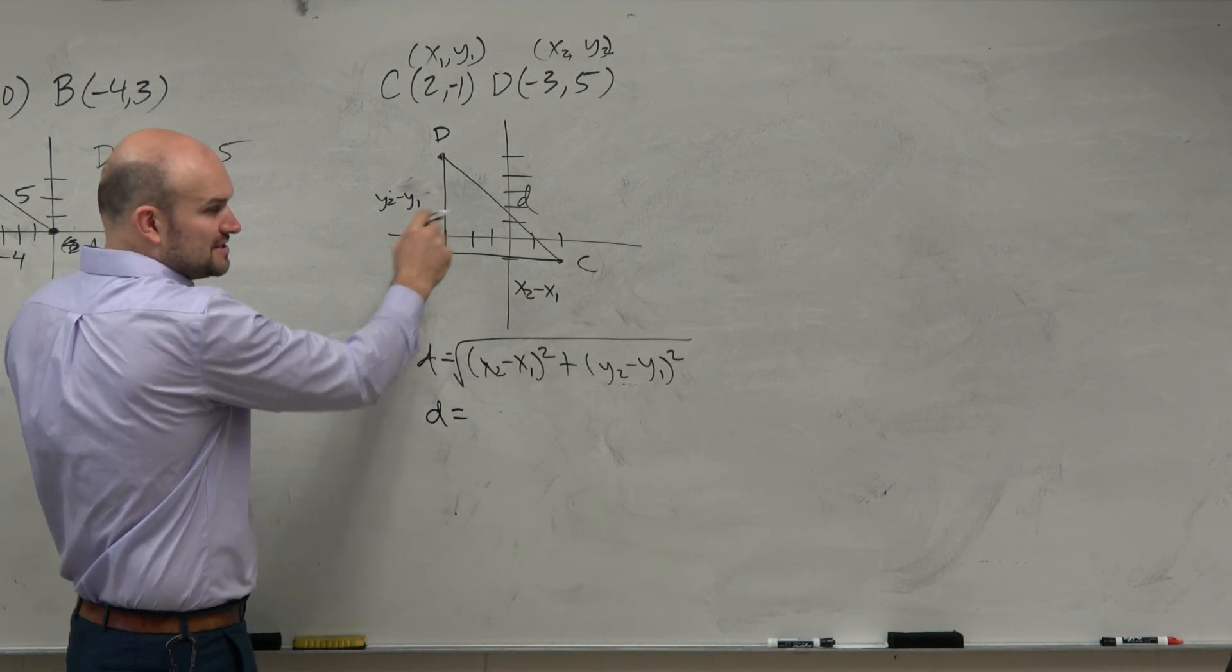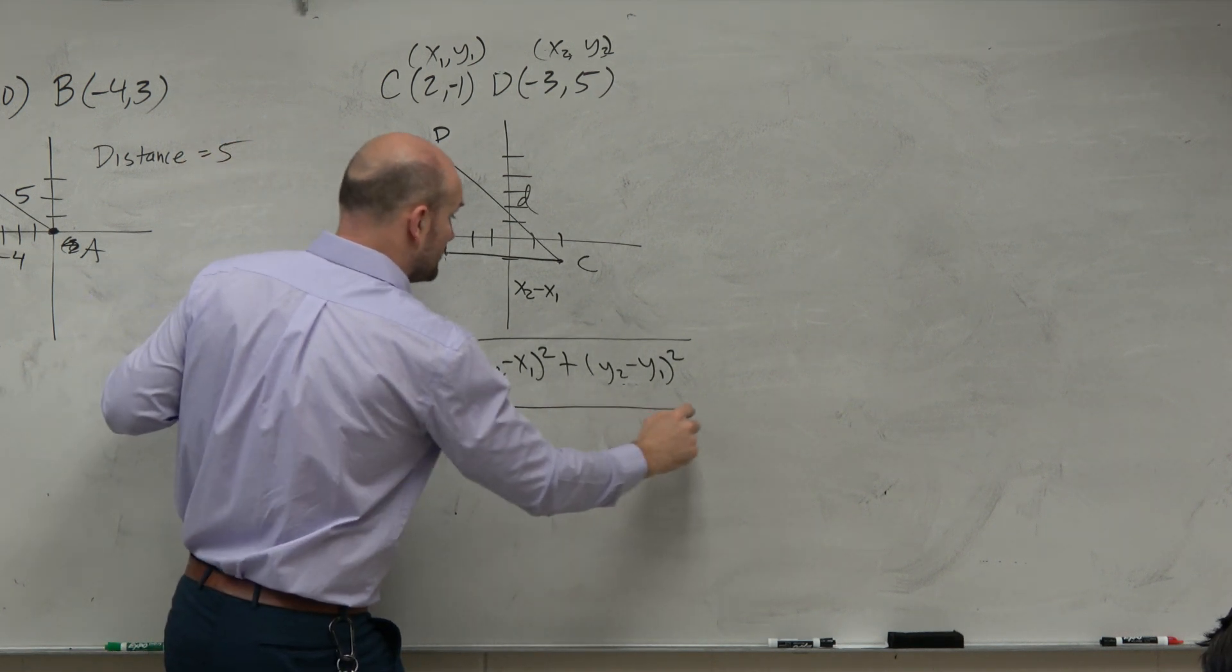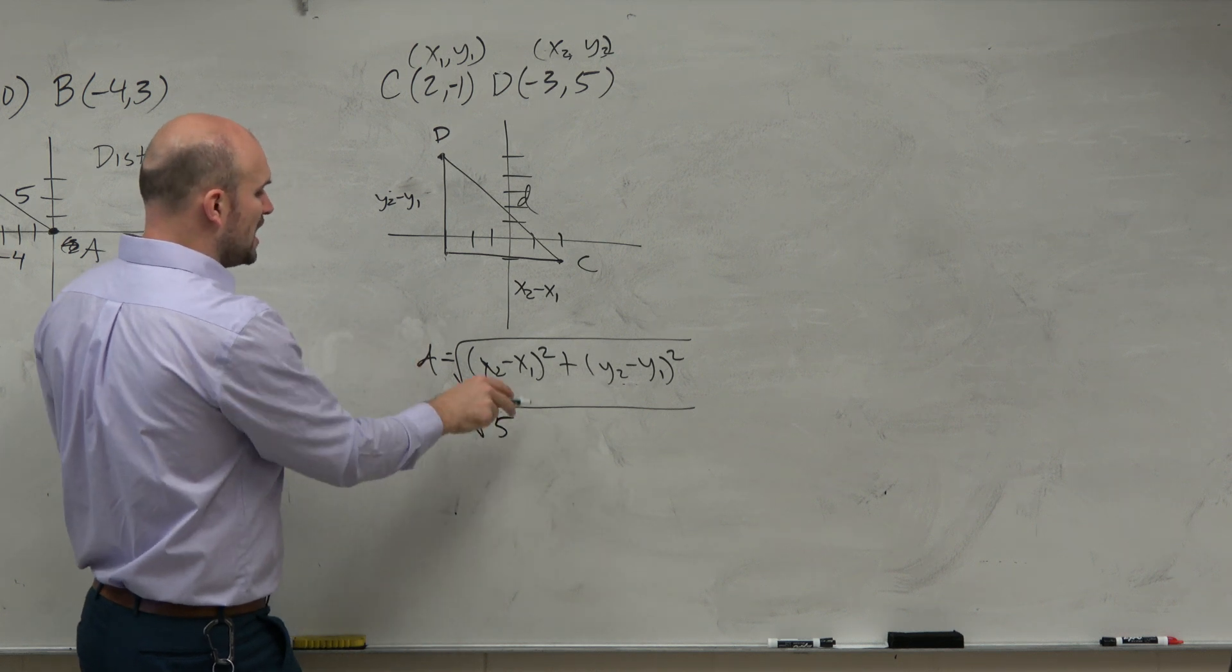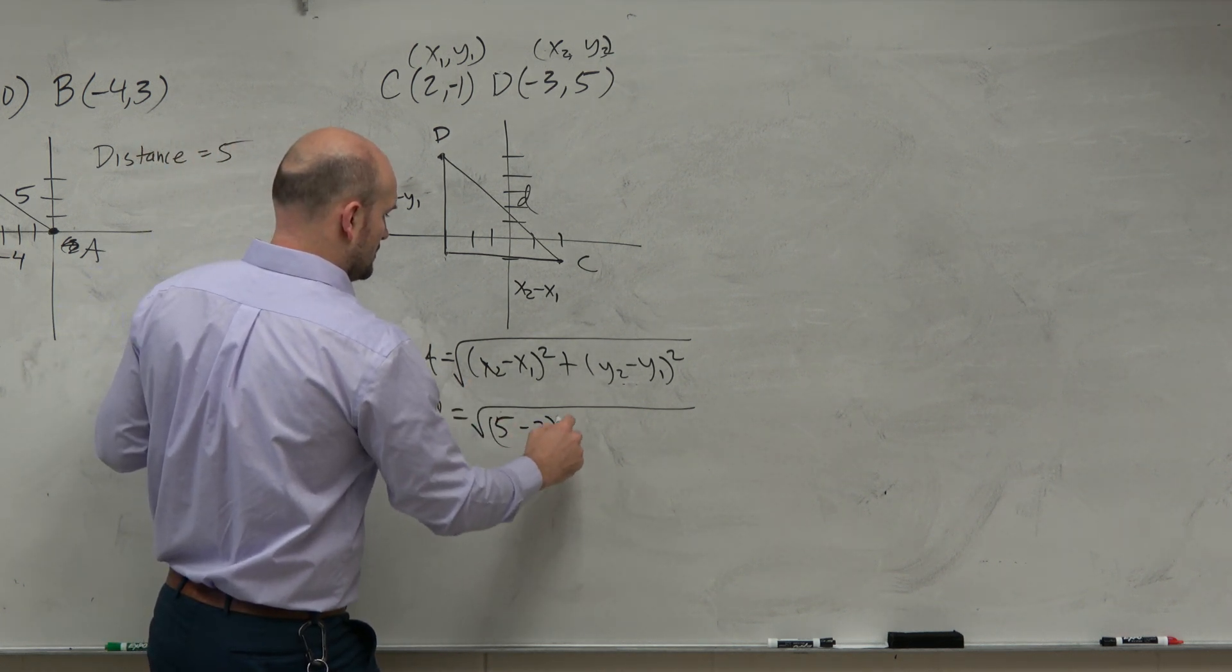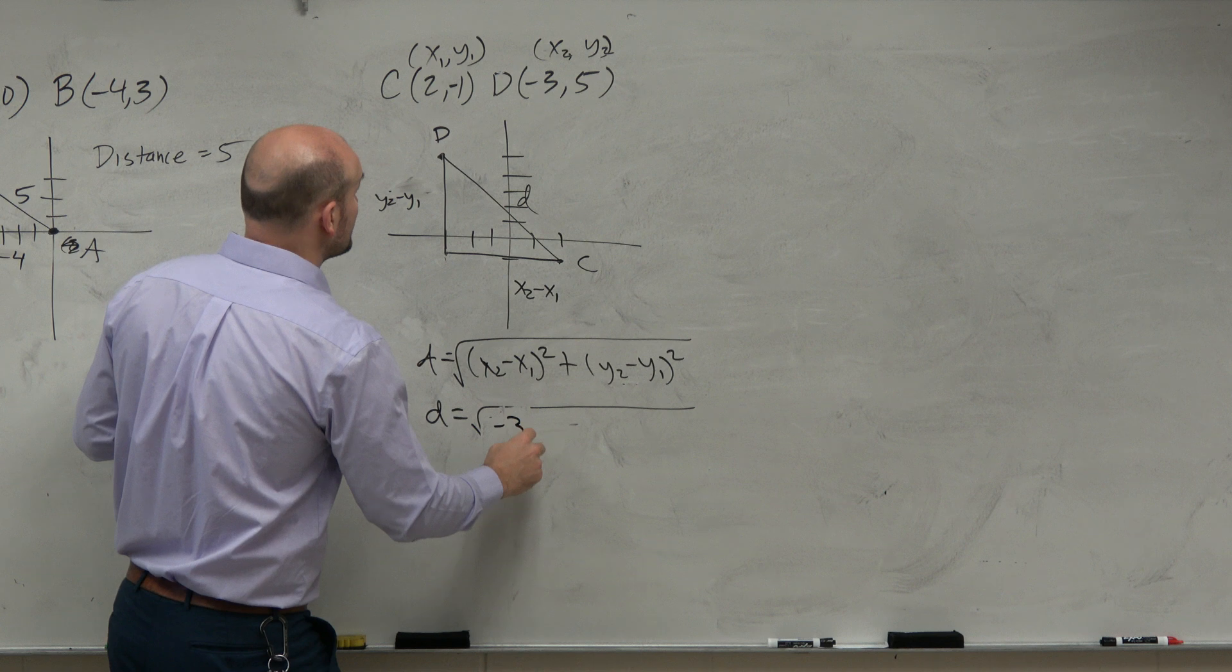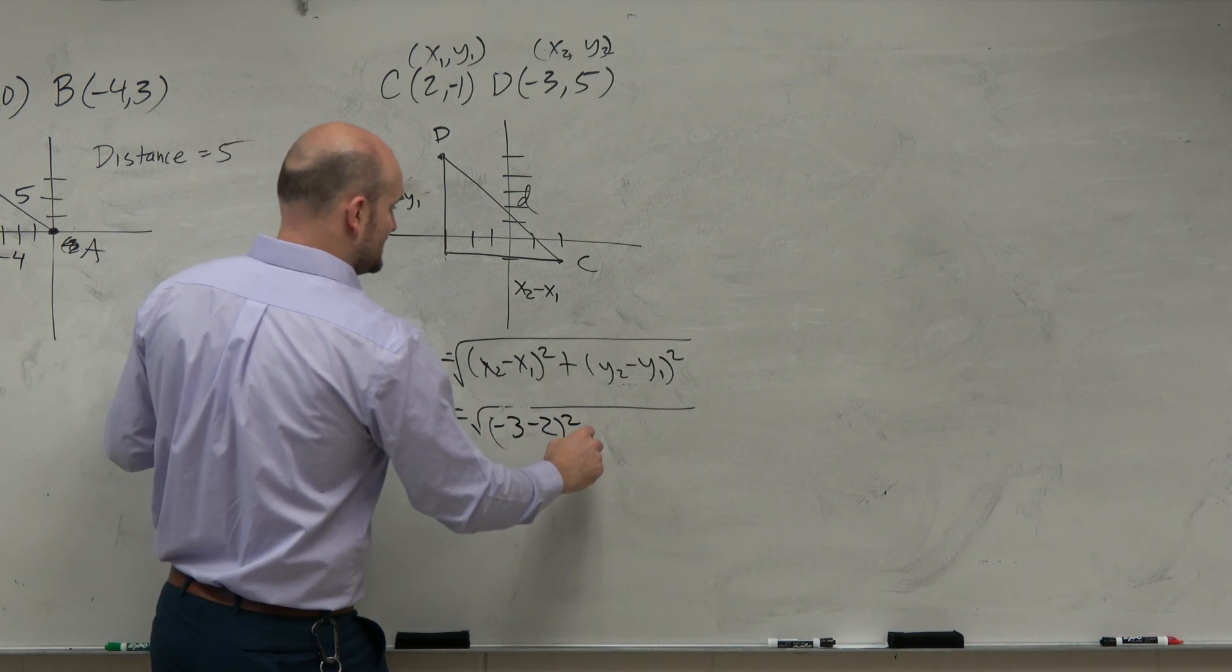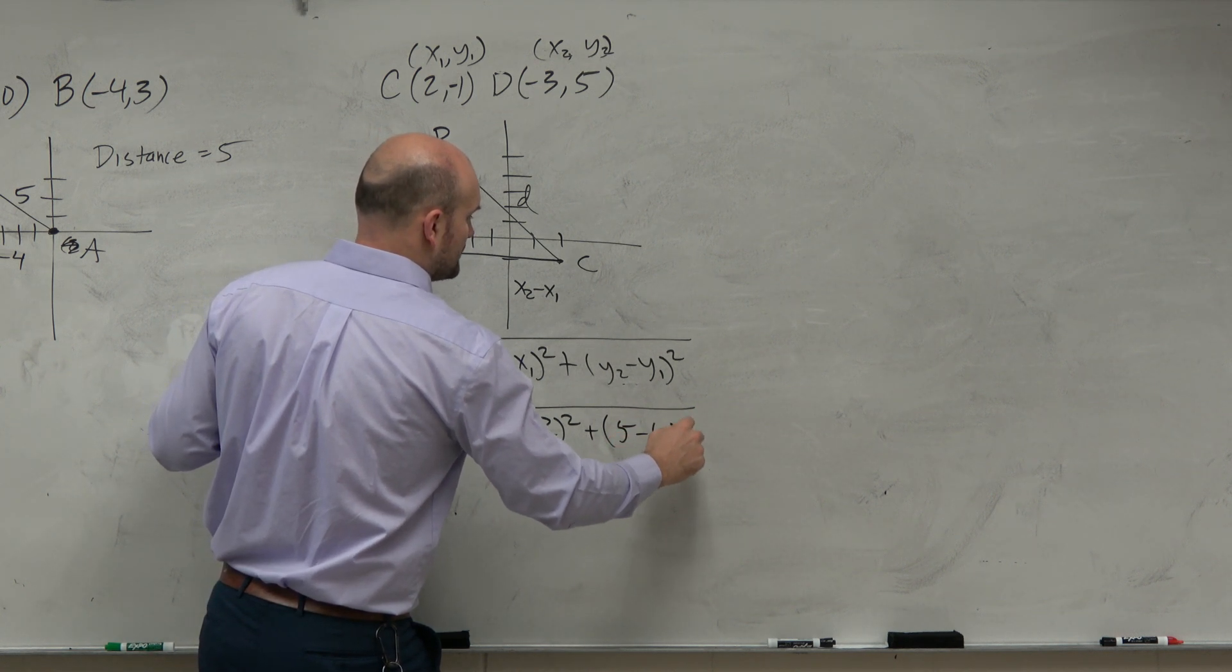Again, obviously you guys could just go ahead and count. I know I'm just kind of wanting to remind you of that. So let's just kind of work this out, because I'm going to play off of this. So 5 minus 2 quantity squared. I'm sorry, I was doing the y's. So we have negative 3 minus 2 quantity squared and plus 5 minus a negative 1 quantity squared.